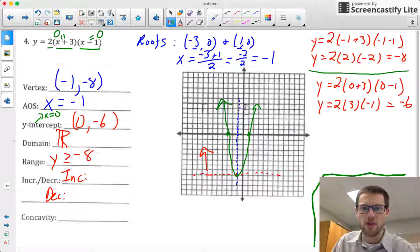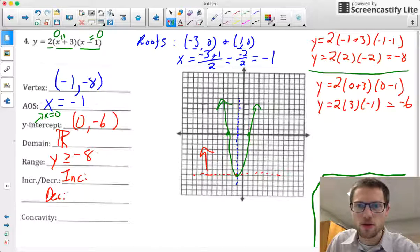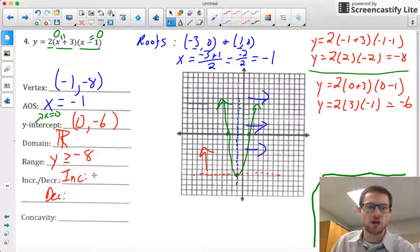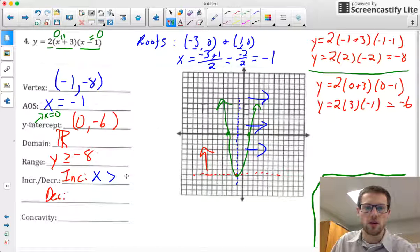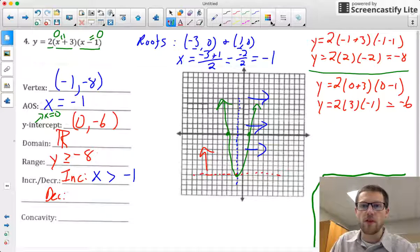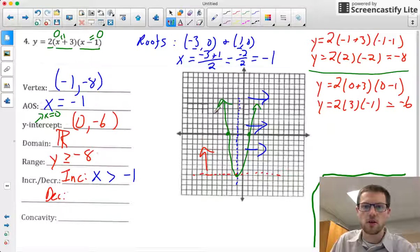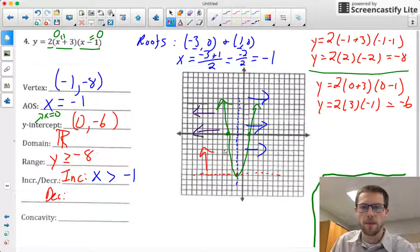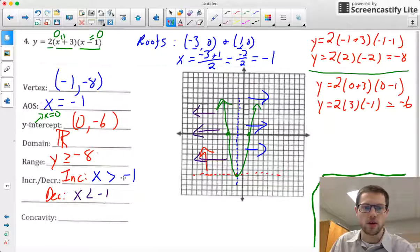A way to describe everything to the right of the vertex is by using this inequality: x > -1. Everything to the left of my vertex is when I'm decreasing. So my parabola is going downwards when x < -1.